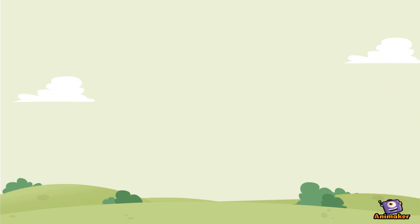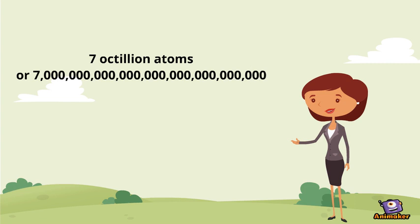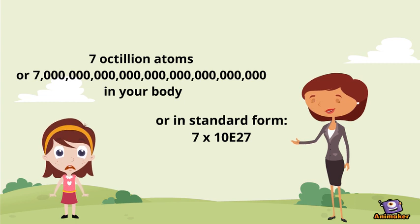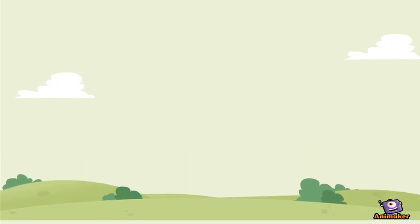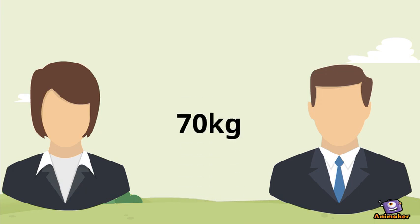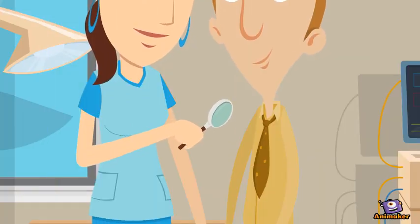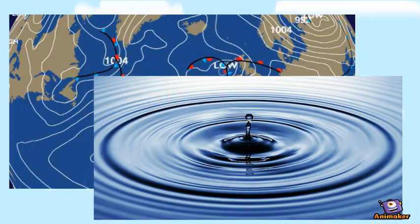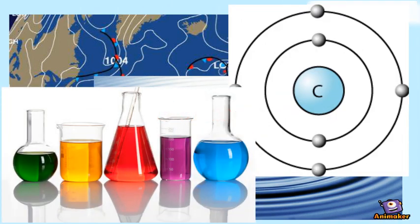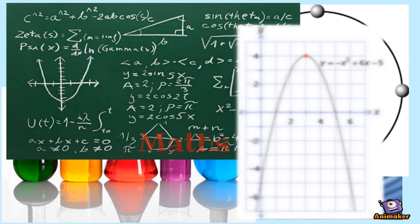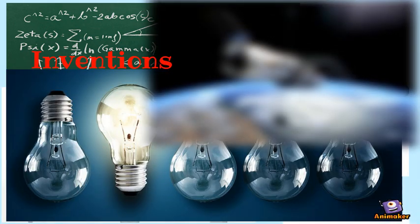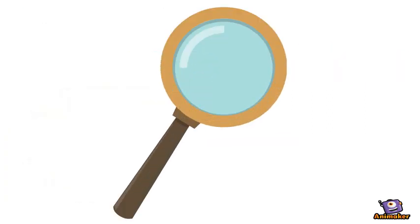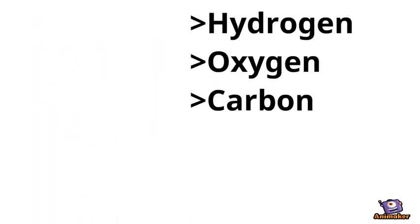Hello everyone! Did you know you have seven octillion atoms in your body — that's seven with twenty-seven zeros after it, written as seven times ten to the power of twenty-seven in standard form. This is only accurate for an adult weighing approximately seventy kilograms. Let's look closer at the three main types of elements in our body: hydrogen, oxygen, and carbon.